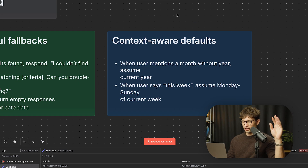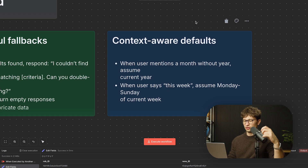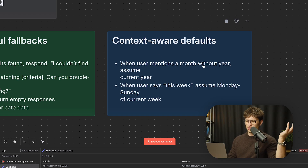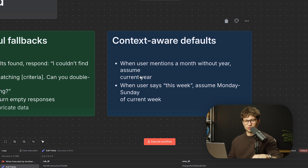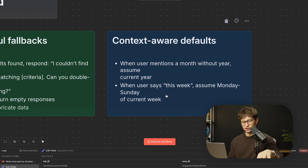Finally, context-aware defaults. We've had issues where for whatever reason it picks a random year upon natural language queries that make perfect sense to us humans. So for example: 'When user mentions a month without a year, assume current year' — you'll need the current year variable for the most consistent output. 'When user says this week, assume Monday to Sunday of current week' — for that, a variable for the current date and time needs to be included in the system prompt as well.